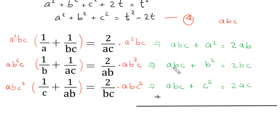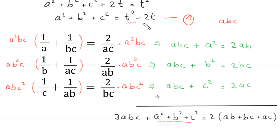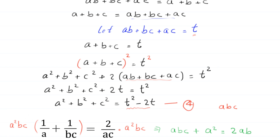We add these three equations. So abc + abc + abc becomes 3abc, plus a² + b² + c² equals 2(ab + bc + ac). We replace a² + b² + c² with t² − 2t from equation 4, and replace ab + bc + ac with t.